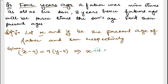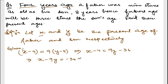It will be X minus 4 is equal to 9 into (Y minus 4), which gives 9Y minus 36. Rearranging: X minus 9Y is equal to minus 36 plus 4, which is minus 32. This is equation number 1.